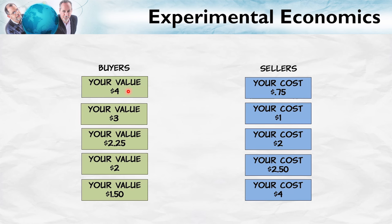At a price of $3.50, for example, the quantity demanded would be 1. But as the price falls to just below $3, the quantity demanded would increase to 2. Similarly, the distribution of cards for the supplier costs determines the supply curve. Moreover, because Smith knew the values that he distributed, he could calculate the demand and the supply curves and the predicted equilibrium prices and quantity.